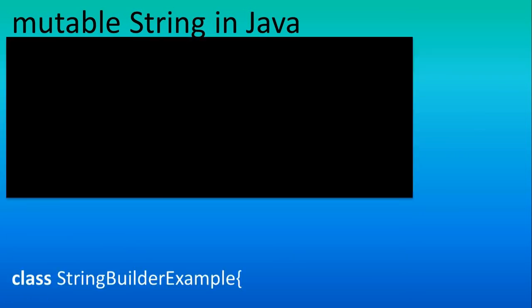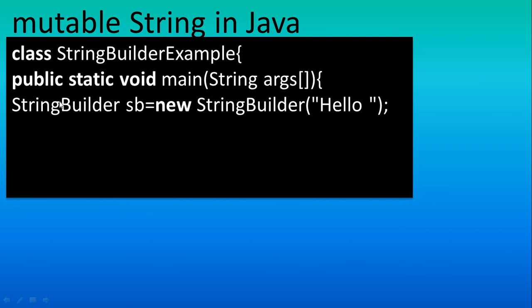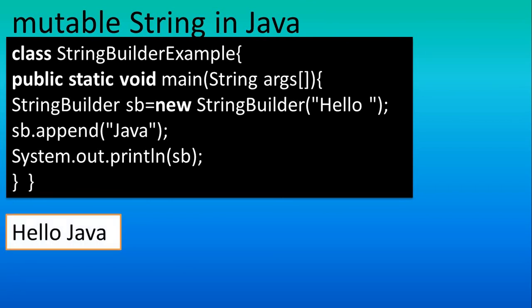We have one more class for this concept — the StringBuilder class. It works like StringBuffer: starting with initial value 'hello', we change this value by adding 'java'. Once you run the output statement, you get the same output 'hello java'. We are changing the initial string value using the StringBuilder class, so that is also known as a mutable class.